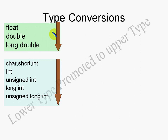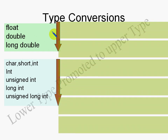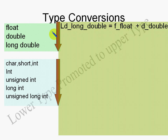Let's go deeper with specific examples. For convenience, variables are named to indicate their type: LD_longdouble is of type long double, F_float is of type float, and D_double is of type double. The rule is simple: if either of the operands is long double, convert the other to long double.